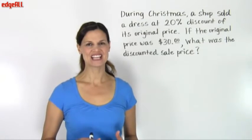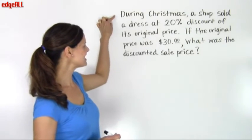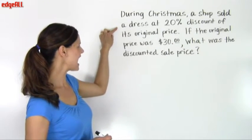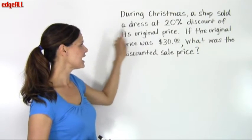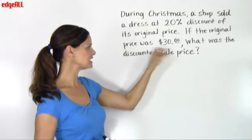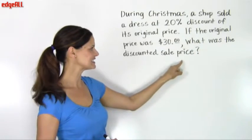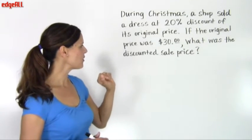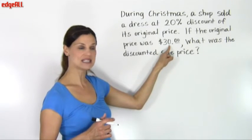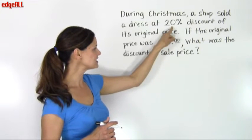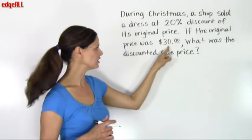Now we'll take a look at an example dealing with discount. During Christmas, a shop sold a dress at 20% discount of its original price. If the original price was $30, what was the discounted sale price? So we know that our original price is $30, and the discount is going to be 20% of the original price, or 20% of $30.